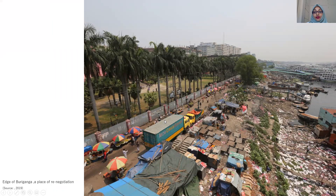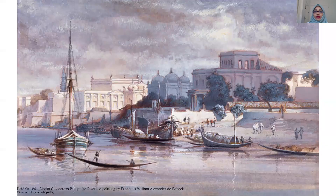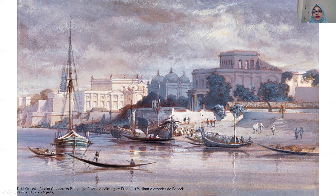Looking at the riverbank of Buriganga, where the city actually grew, this is now essentially a drain — it no longer acts like a river. Industrial waste is dumped there, informal sectors line the back streets, and it is now a transit place rather than a space for social gathering. But the scenario was different in previous times. Looking at historical images of the same place, we can see how the river and the land were interacting with each other and how the riverbank was being used by the city's people.